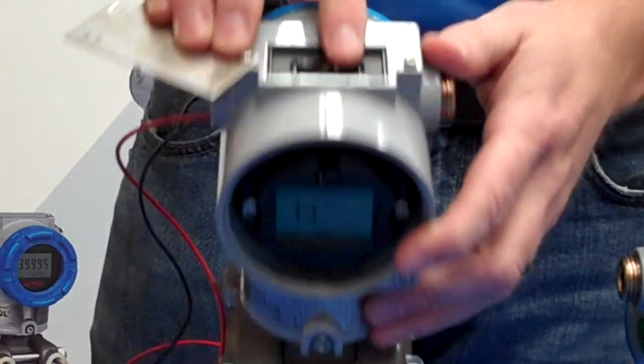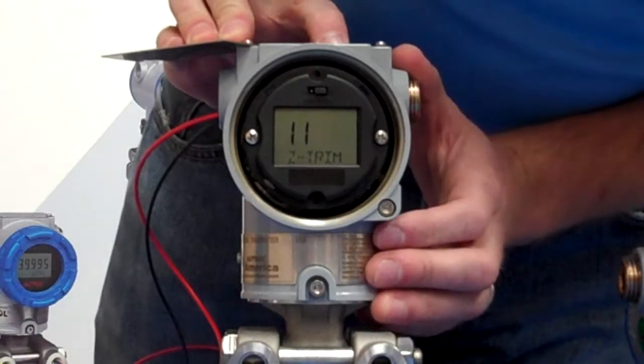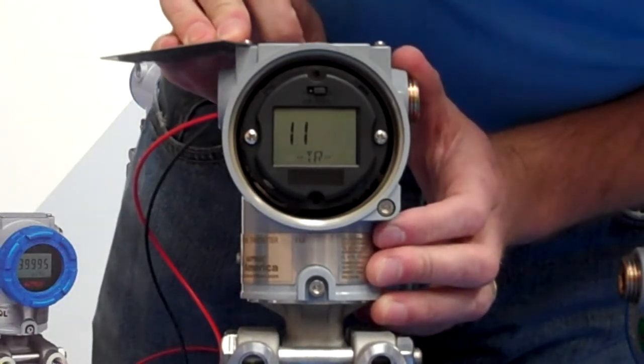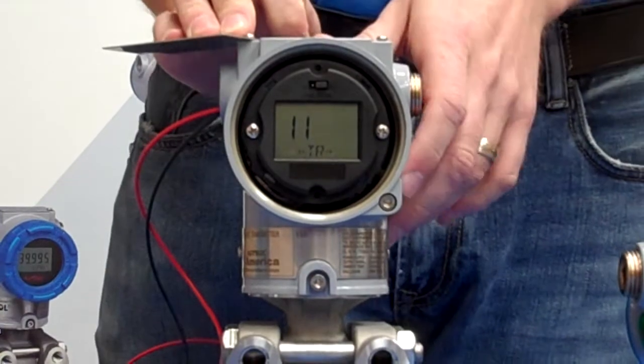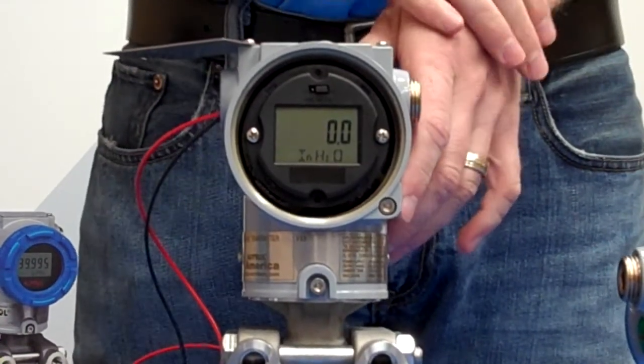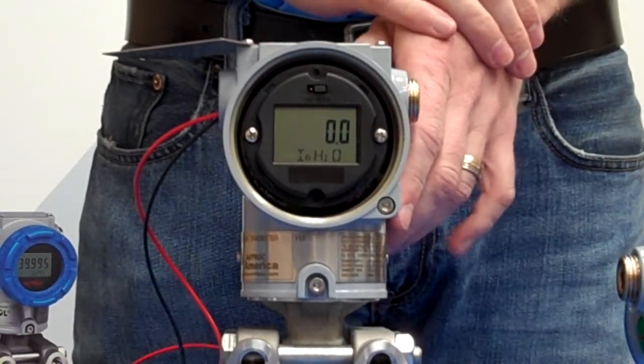And then once again, push and hold the span button and wait for it to show TR. This shows that it is going through the process of doing the zero trim on the transmitter.